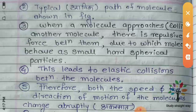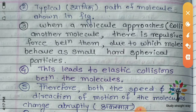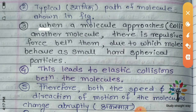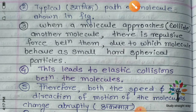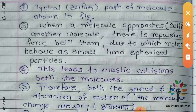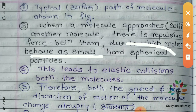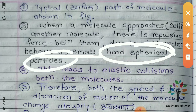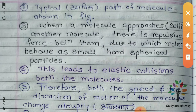That is the ideal gas — we will depend on the ideal gas model. We will say that when the molecules approach or collide, then there is a repulsive force. And due to this, the molecule behaves as a small, hard, spherical particle.